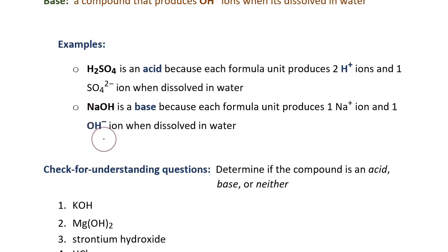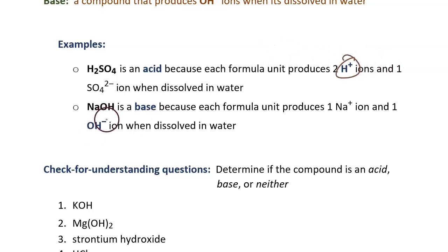So, the acids make the hydrogen ions, and the bases make the hydroxide ions. Here are some check for understanding questions. Determine if the compound is an acid, a base, or neither.